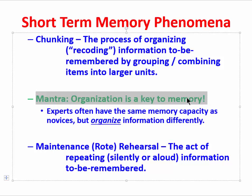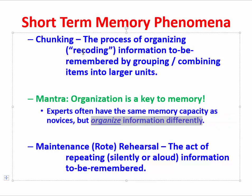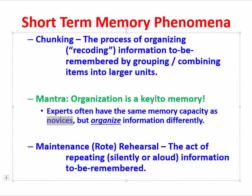Experts often have the same memory capacity as novices, but what makes an expert an expert is their capacity to organize information differently. When they organize it, they can turn it into a chunk, and that one chunk constitutes just one of the seven plus or minus two items in working memory. Novices may not be able to organize information as effectively, so they have to use each component as a separate item in memory, resulting in less effective memory because they haven't rolled components up into one of Miller's magic number items.